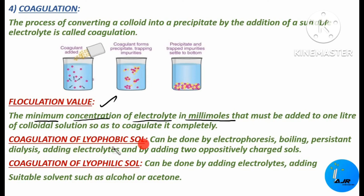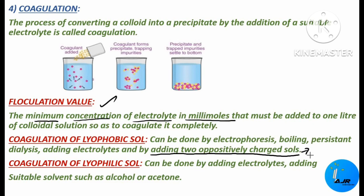Coagulation of lyophobic sols can be done by electrophoresis, by boiling, by persistent dialysis, or by adding electrolytes, or by adding two oppositely charged salts. When two oppositely charged salts are added, neutralization takes place — this causes neutralization of charges on the colloidal particles, leading to coagulation. This type of coagulation — by adding two oppositely charged salts — is called mutual coagulation.